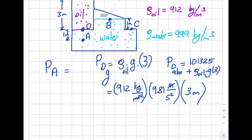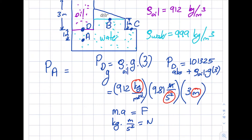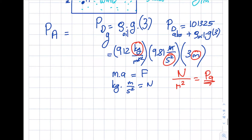Let's look at the units. I have meters squared from the calculation. M times a is force: kilogram times meter per second squared equals Newton. So kilogram, meter, and seconds squared become Newton in the numerator. At the denominator I have meter squared. Newton per meter squared is Pascal. Now punching this into the calculator: 912 × 9.81 × 3 gives 26,840 Pascals gauge.